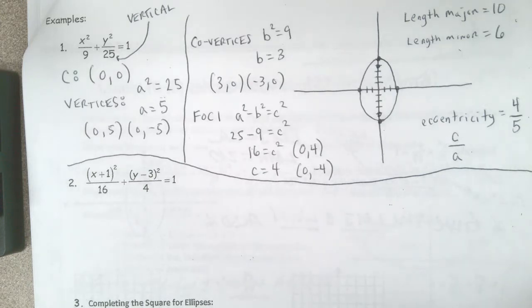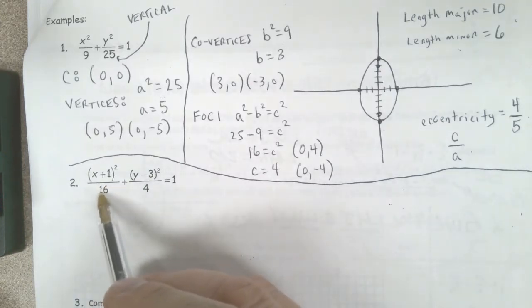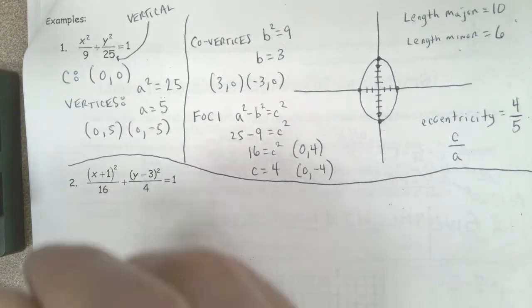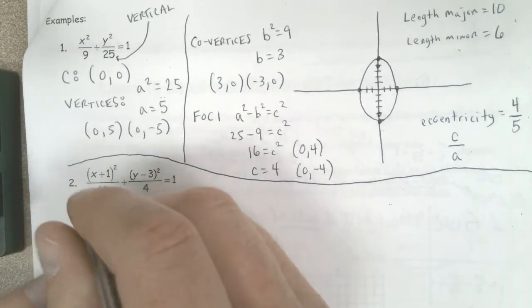This one's going to be horizontal. How do we know that? We know that because the 16 is under the x. That's the bigger a value or the bigger number in the denominator.